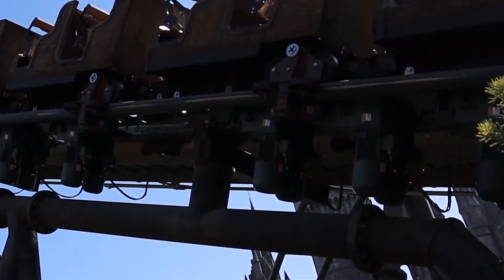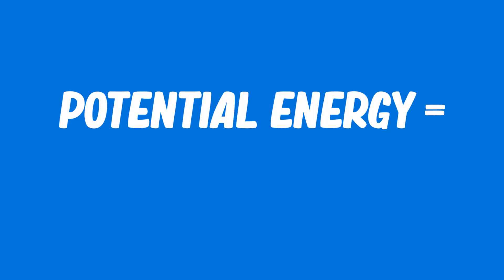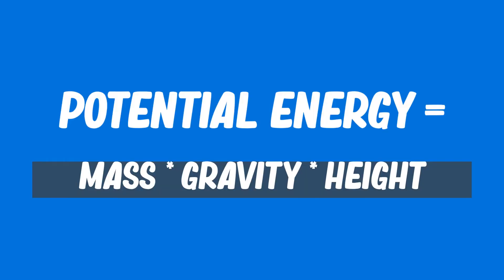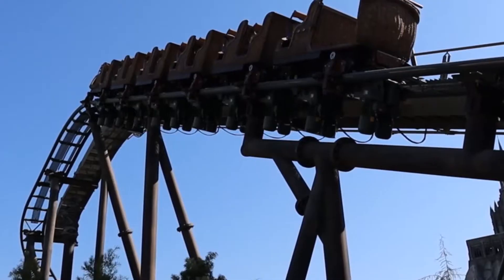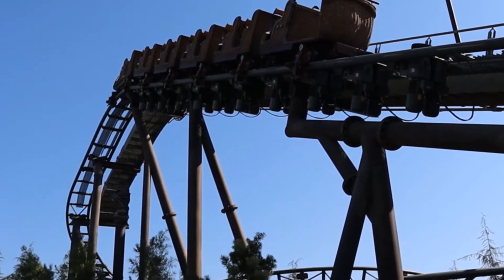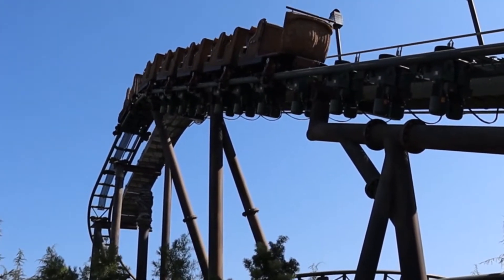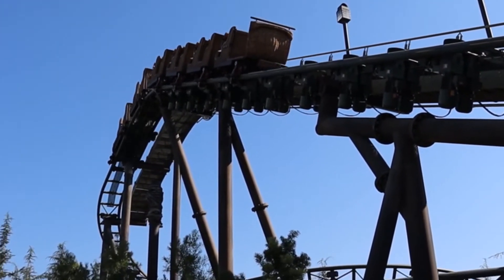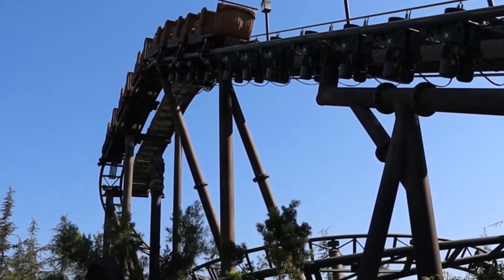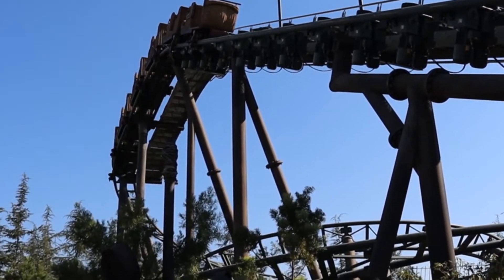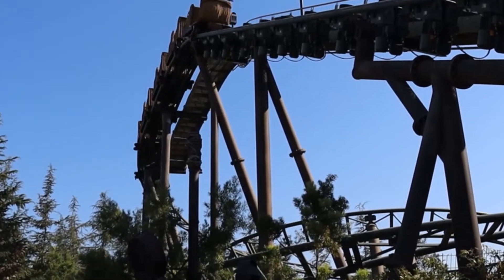Once the train is at the top of the hill, it has what's called potential energy, which is mass times gravity times height. So the higher the train, the more energy it has. This potential energy turns into kinetic energy once the train is let go over the hill.